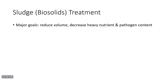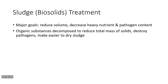Finally, your sludge cannot be released as-is into the environment — you have to treat it first. The major goals are to reduce the volume of it, especially by removing water; decrease the heavy nutrient content to make sure it doesn't cause eutrophication or nutrient pollution; and make sure it doesn't contain pathogens. You'll run it through with some bacteria or other decomposers to break down any organic substances, which helps reduce the total mass.